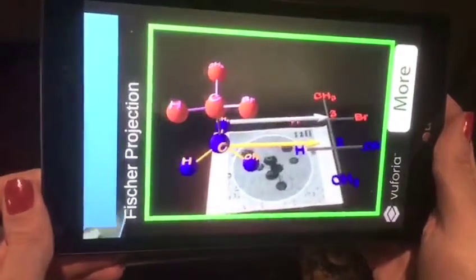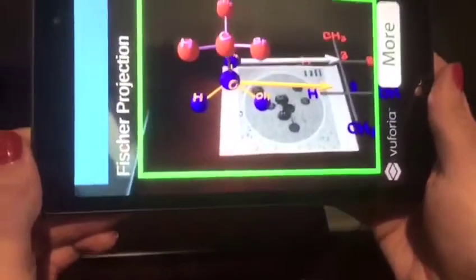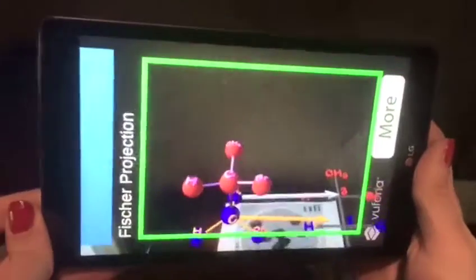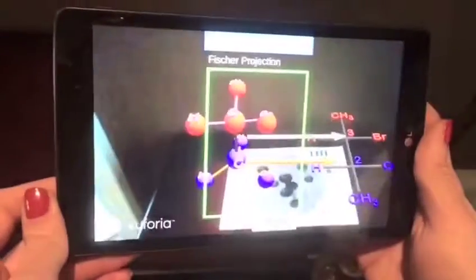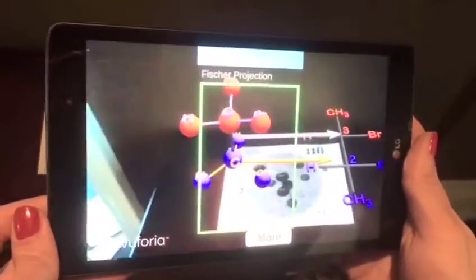As you can see, when you point the camera of the tablet at the computer-coded marker, you're able to visualize the augmented reality image. In this case, a Fischer projection transformed from its respective perspective formula.